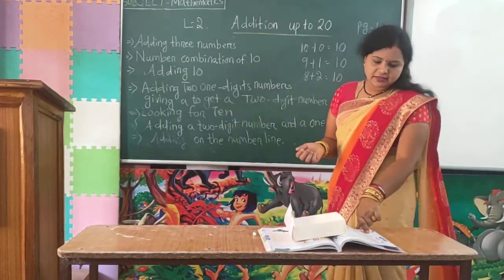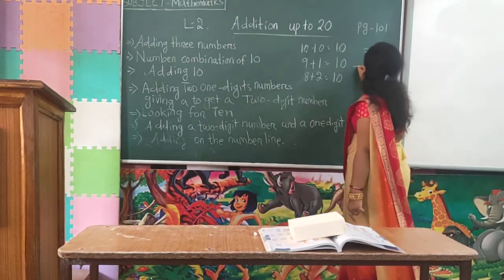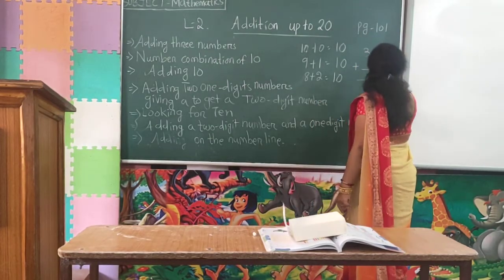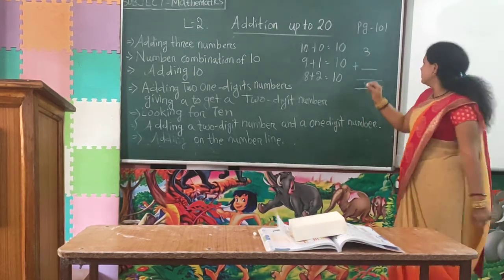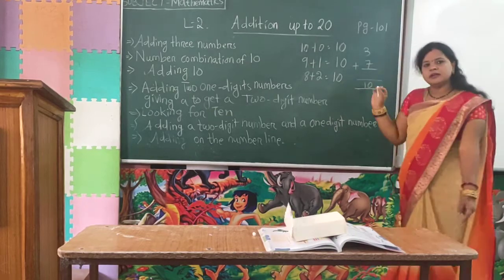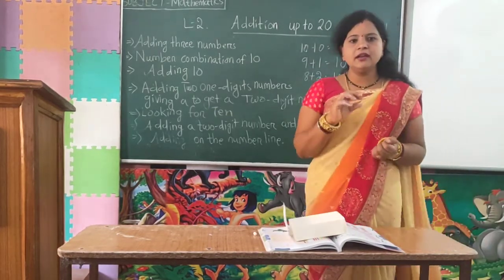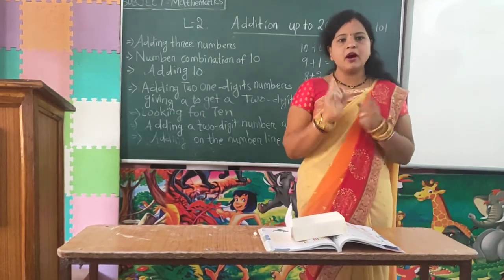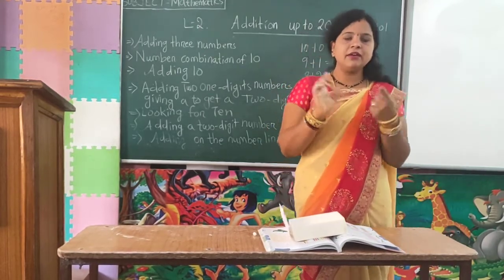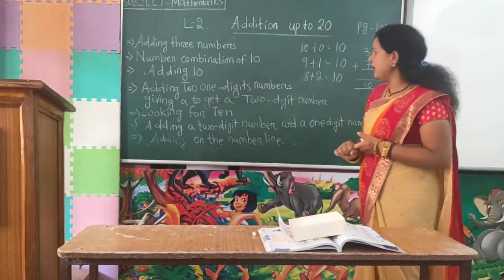In your exercise it is given: 3 plus dash is equal to 10. As I told you, 3 plus 7 is equal to 10. So you have to do the combination of 2 numbers up to 10 — when we add 2 numbers the answer should be 10.